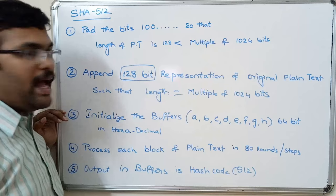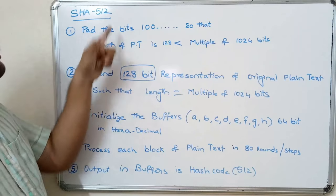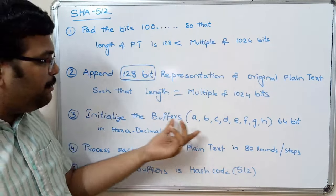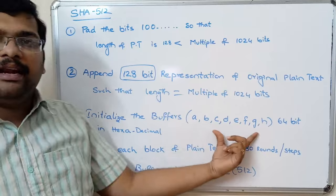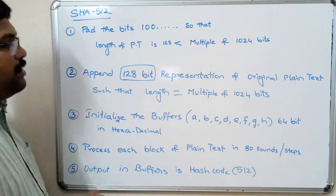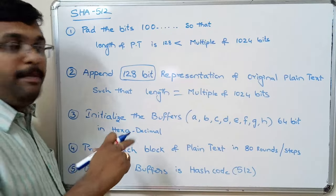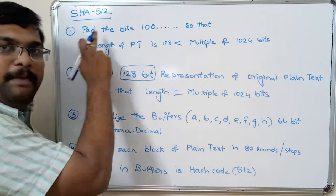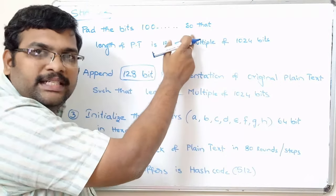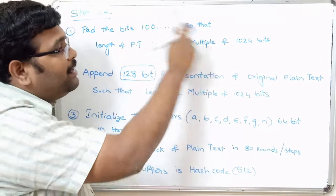As the output is 512 bits we call it SHA-512. If the output were 128 bits, the number of buffers would be reduced accordingly. Once again: first, pad the bits with 1 followed by zeros until the length is 128 bits less than a multiple of 1024.